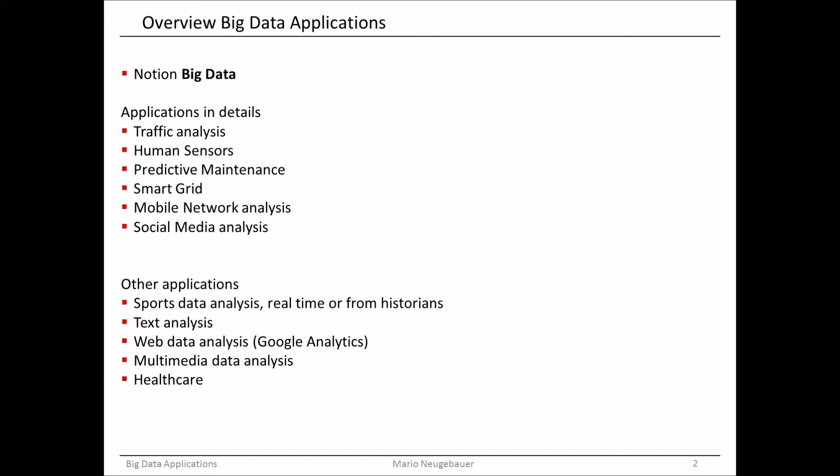Then we have predictive maintenance, quite common when you are in industries, because it's important for the machine maintenance, the failures of machines, and you do predictive maintenance to avoid these failures upfront. Then we have the smart grid application. This is something what households are dealing with. In mobile network analysis, there are also big amounts of data which the mobile operators use to improve their quality of the networks.